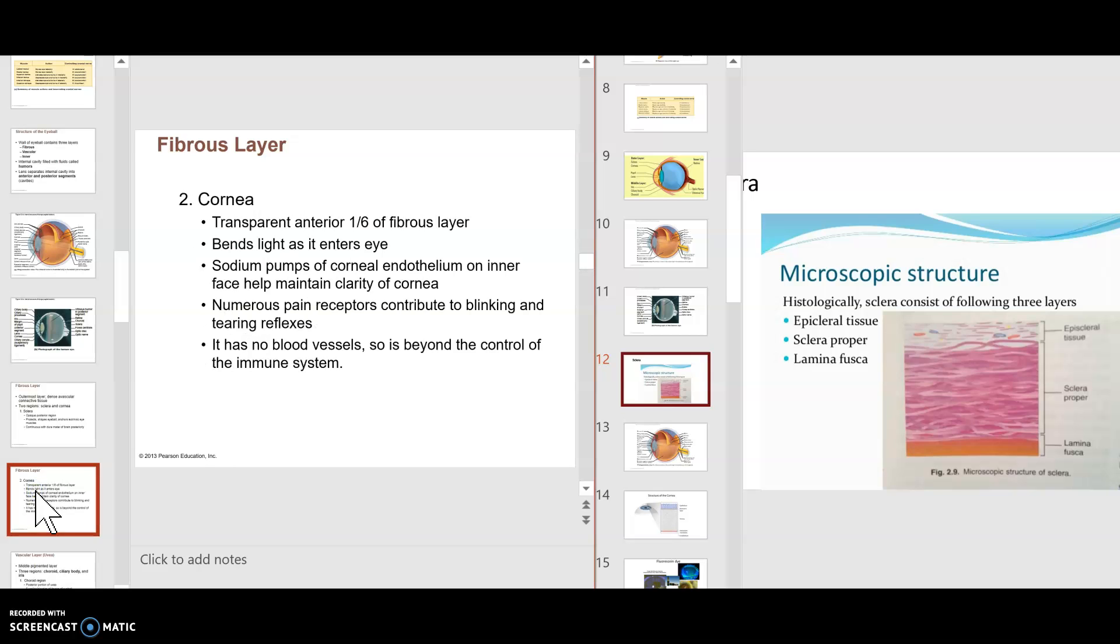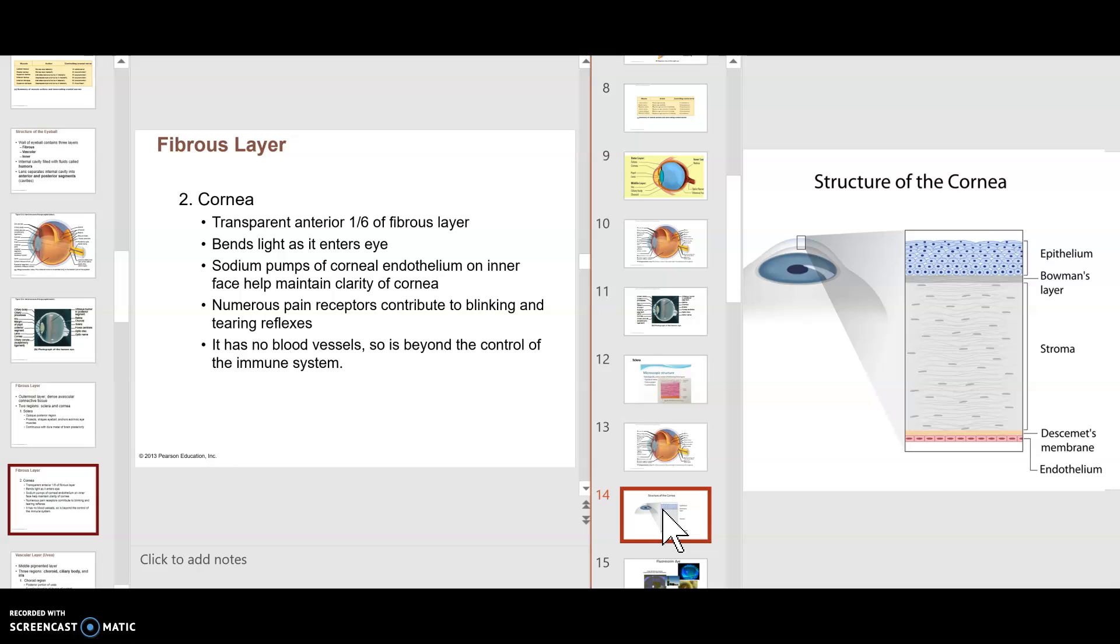Then we go to that outermost layer, still fibrous layer. You go to the cornea. The cornea is transparent anterior one-sixth of the fibrous layer. And that cornea bends light as it enters the eye. It has sodium pumps. So basically, here's the cornea. It has an epithelial layer on the outside and an epithelial layer on the inside. And this epithelial layer on the outside is a squamous layer, kind of a stratified squamous layer. Then you have this stroma. But all of this is very clear.